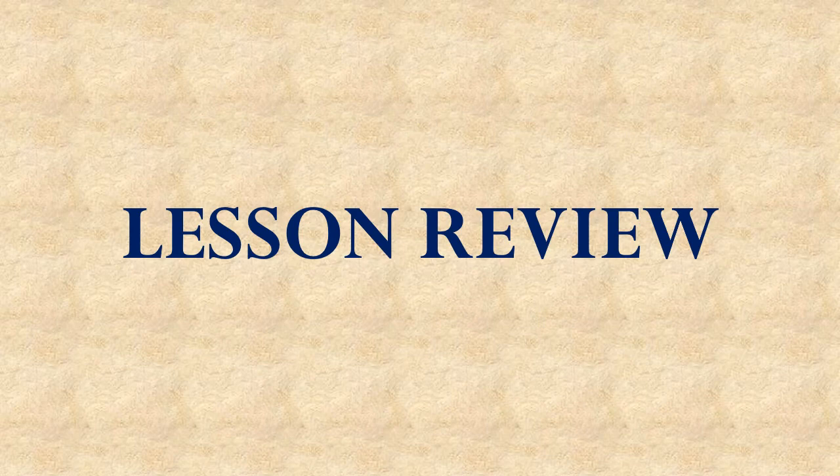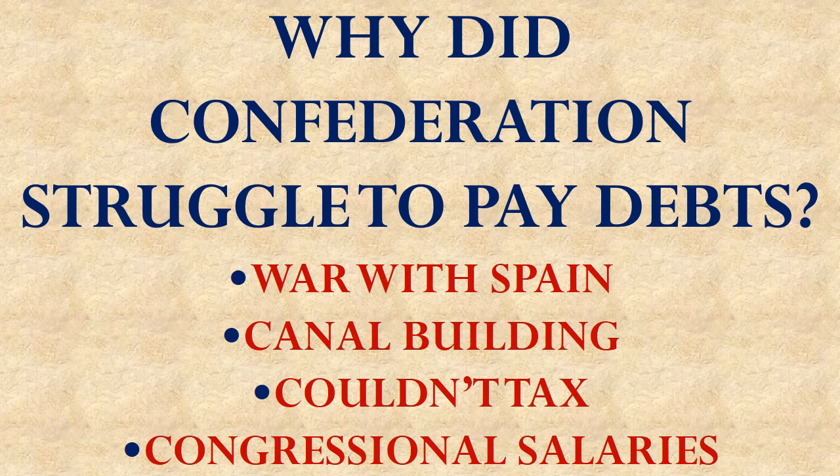Now let's review what we learned in this lesson. First, why did the Confederation struggle to pay its debt? Was it because they were at war with Spain, building canals, couldn't tax anyone, or had high congressional salaries? The answer is that they couldn't tax anyone. This was a fundamental weakness of the Articles of Confederation—it had to ask permission from the states to do just about anything, and the states weren't willing to give their permission.